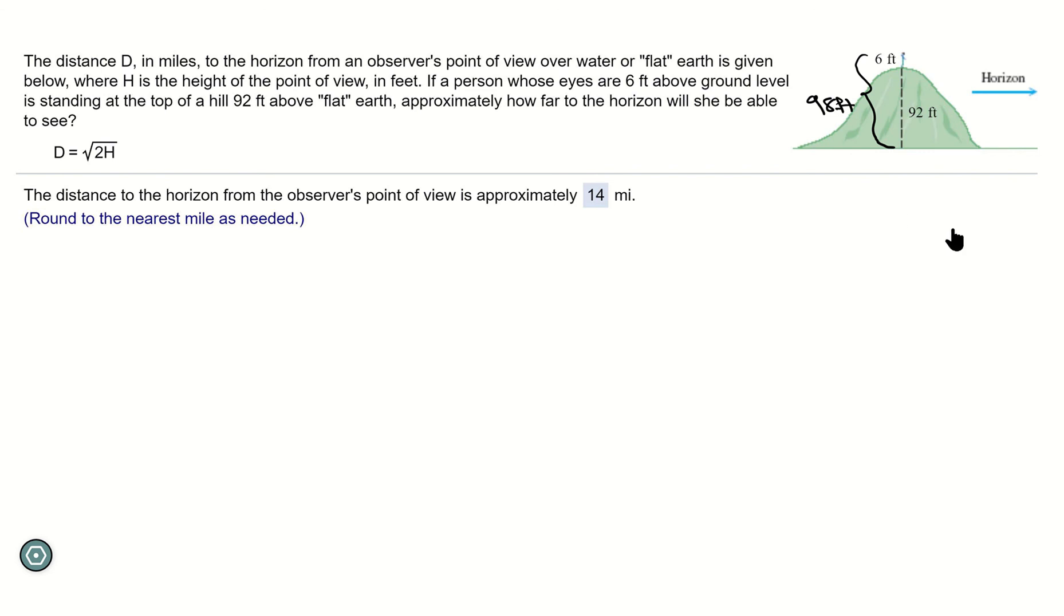So all we're going to do is say d = √(2 × 98), where 98 is the total height of the point of view all the way up to the observer's eyes.